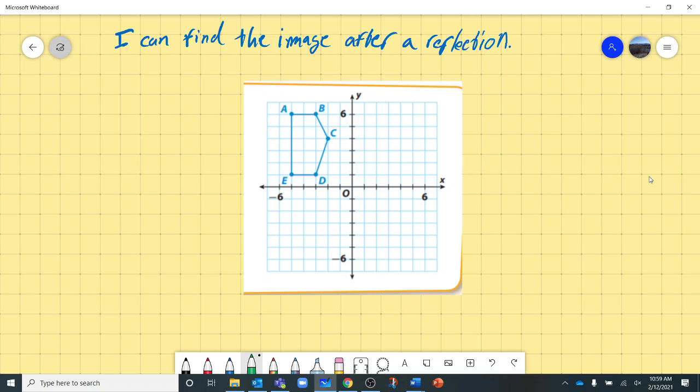All right, so our objective for this one is I can find the image after a reflection. If you think about a lake with a mountain next to it and the lake water gets really still, you can see the reflection. Kind of see if you can think about that. What does it look like? What would you picture?